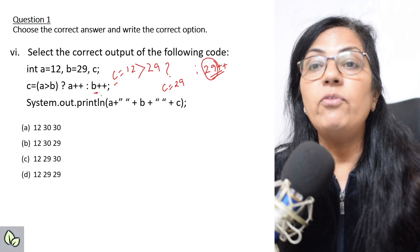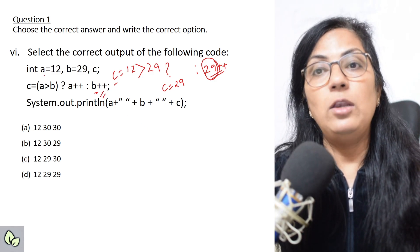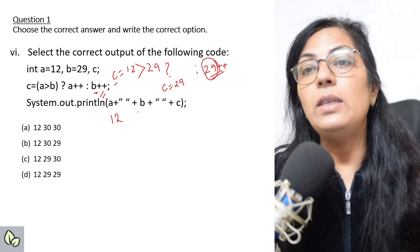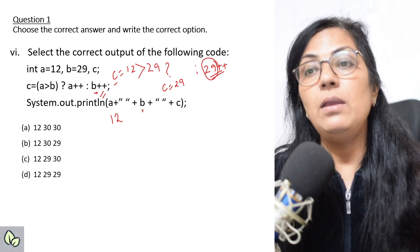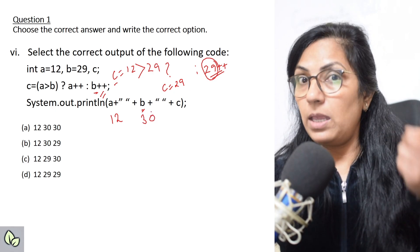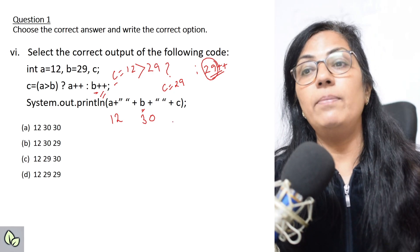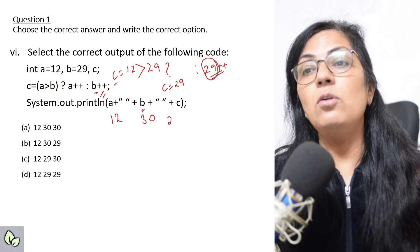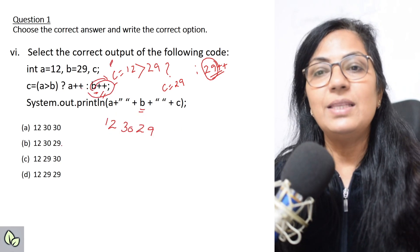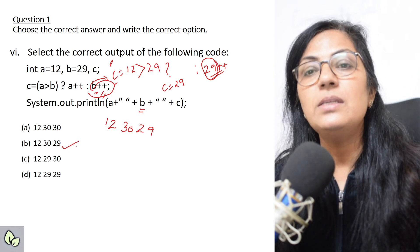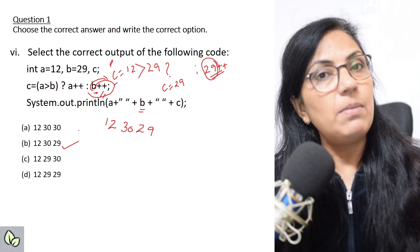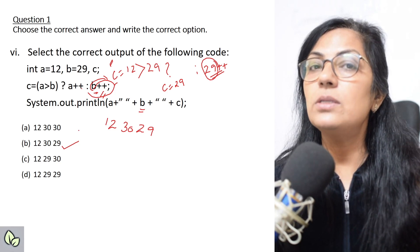After c takes the value 29, the value of b is incremented by 1. The value of a remains 12 — nothing is done to it. The value of b is now 30 (29 was stored in c and then b became 30). The value of c is 29. So the output is 12 30 29. Please check whether this option is present — and it is, so this is the correct answer. Please practice increment and decrement operators carefully.